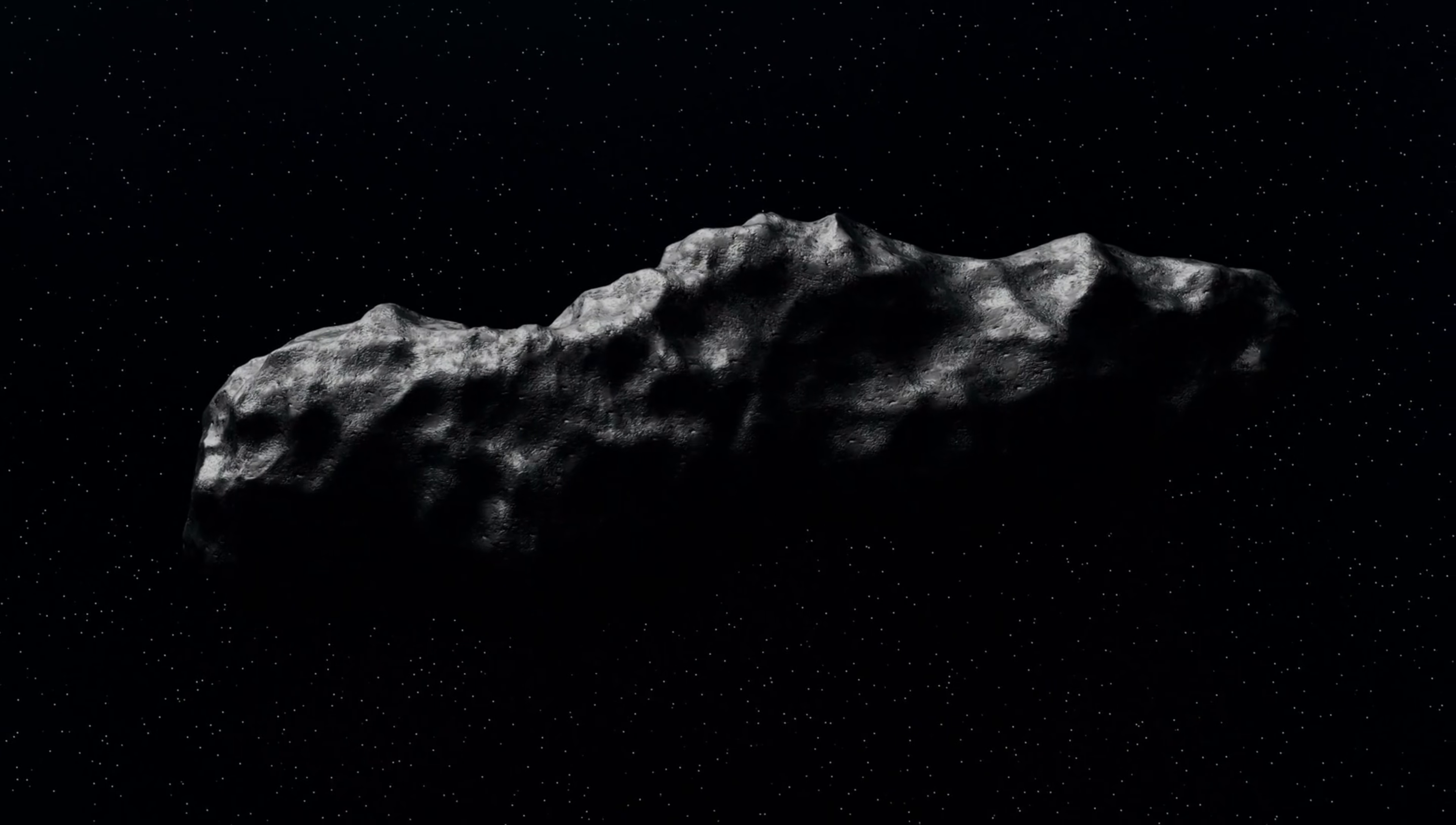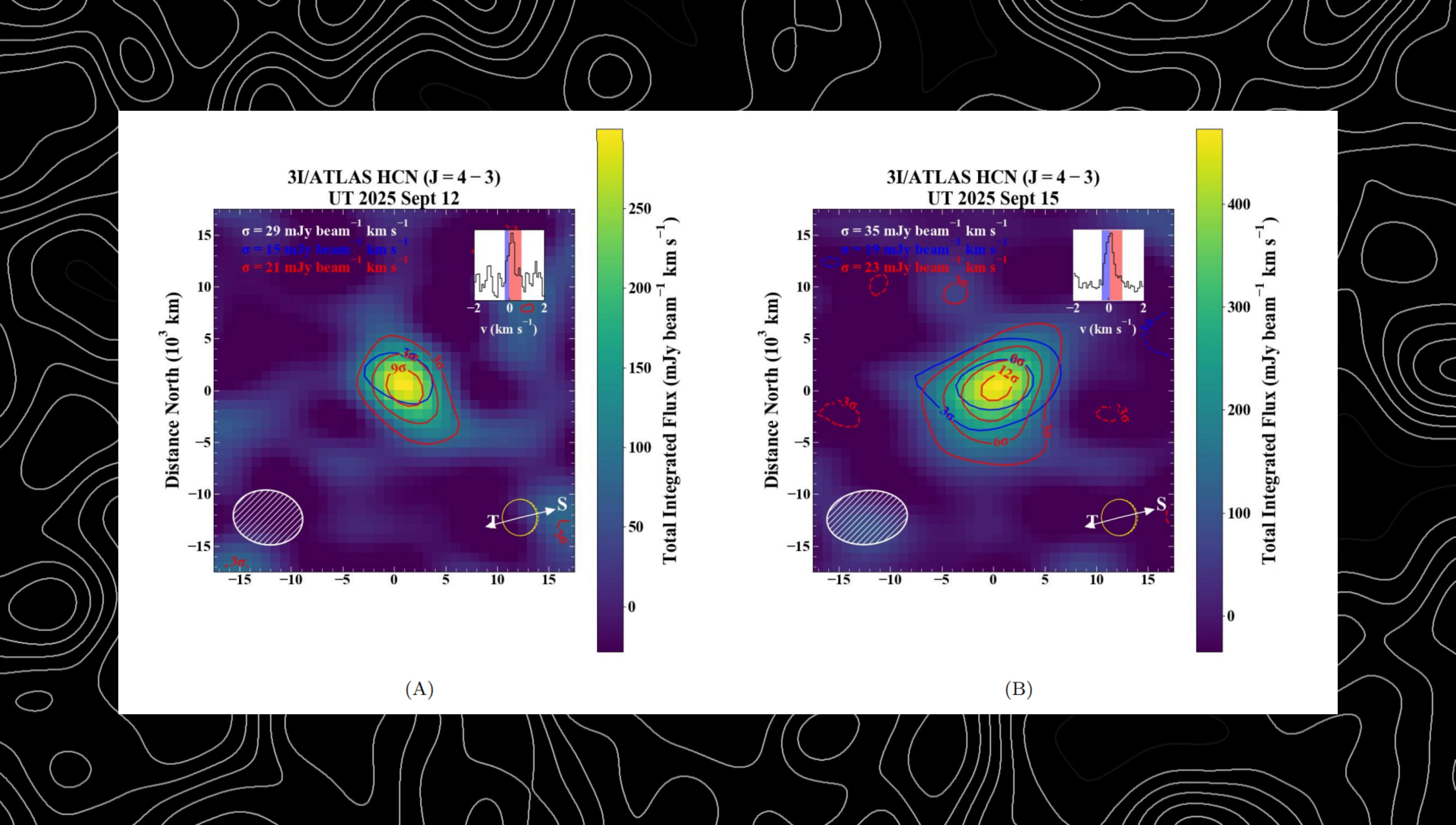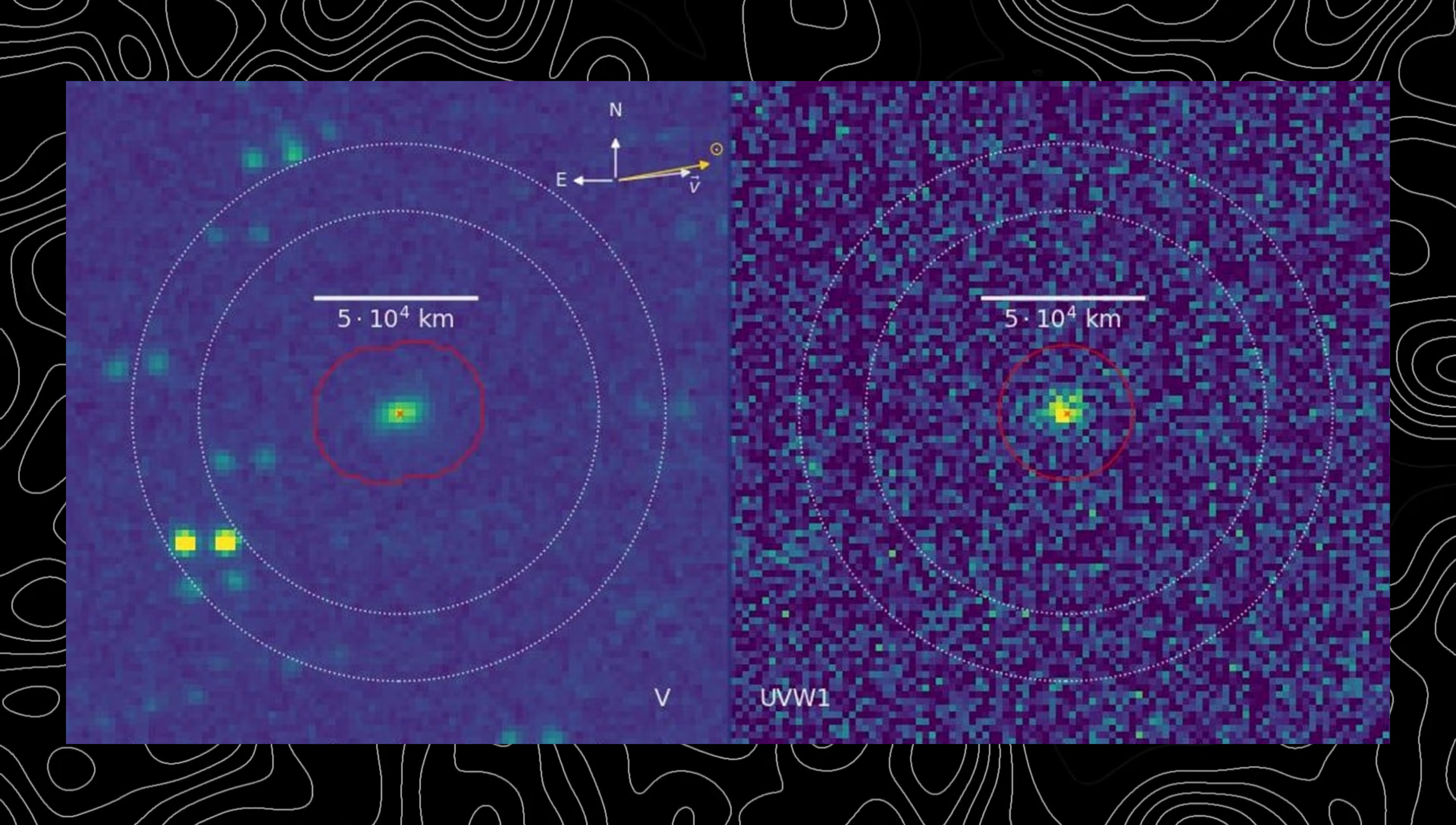Next, the chemical composition of 3I Atlas was a subject of great interest. The gas surrounding the object was found to contain a high concentration of nickel, a metal that is rarely found in the outgassing of typical comets. The object also exhibited low levels of water, which is a significant departure from the chemical makeup of most comets.